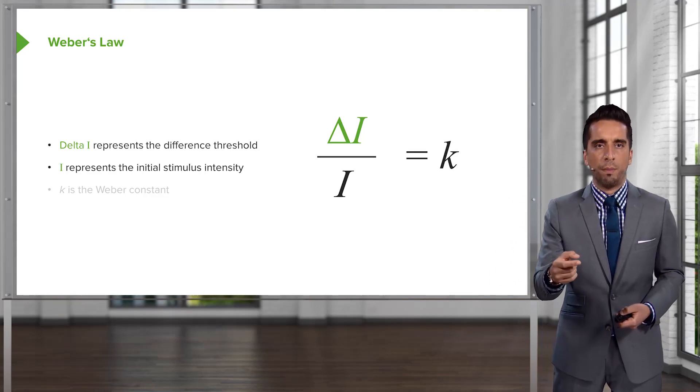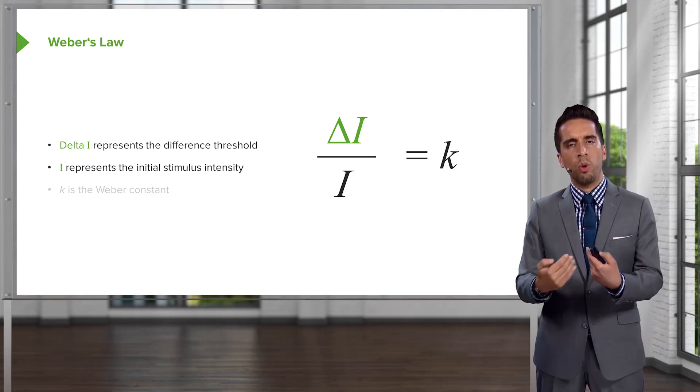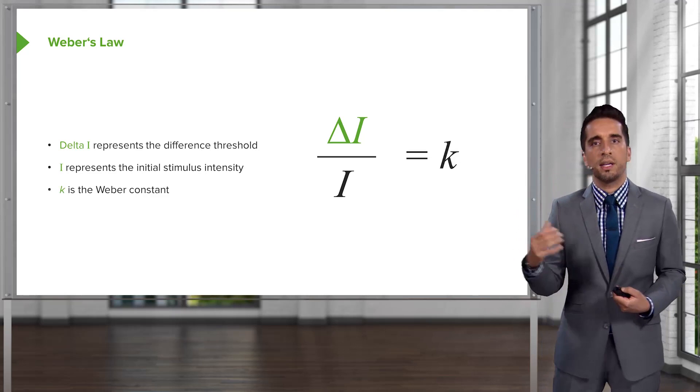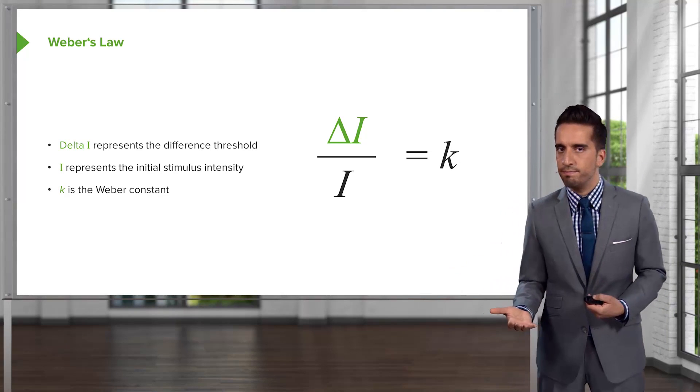And the I represents the initial stimulus intensity. So, what were you starting with? The delta is the difference. And you put those over one another, and you're going to get the K which is Weber's constant.